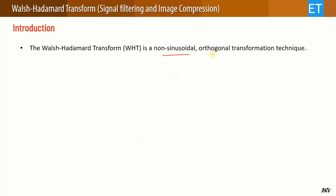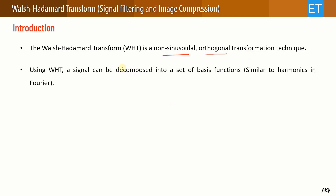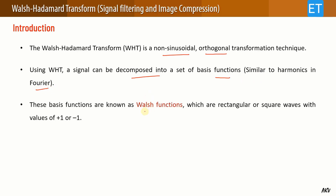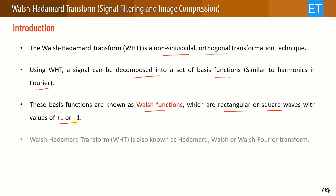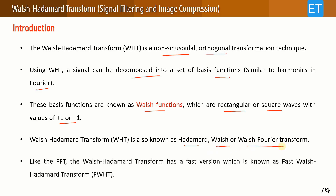The Walsh-Hadamard transform is a non-sinusoidal orthogonal transformation technique where a signal is decomposed into a set of basis functions, similar to harmonics in Fourier. These basis functions are known as Walsh functions — rectangular square waves having values of plus one or minus one. The Walsh-Hadamard transform is also known as the Hadamard transform, Walsh transform, or Walsh-Fourier transform. Like the FFT, it also has a fast version known as the Fast Walsh-Hadamard Transform, or FWHT.